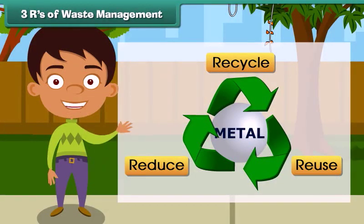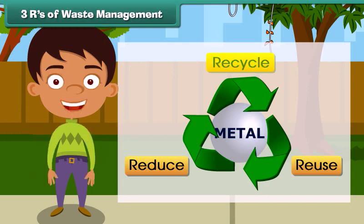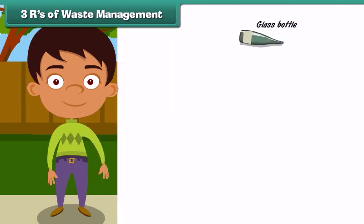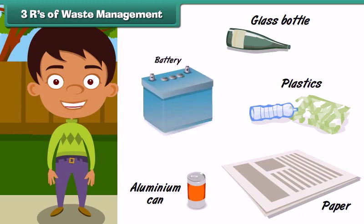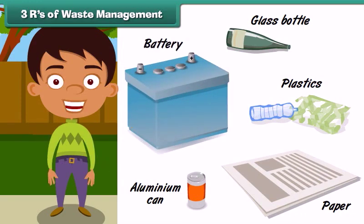Three R's of waste management: The first R stands for recycle. Recycle means to process old, used items in a way that they can be used to make new products. For example, items made of glass, plastic, newspapers, aluminium cans and batteries can be recycled to make new products.